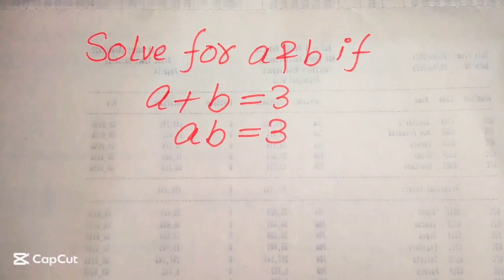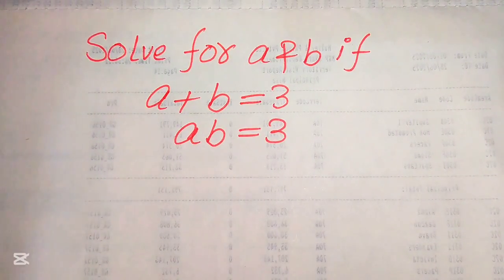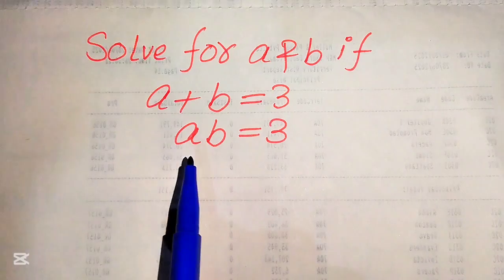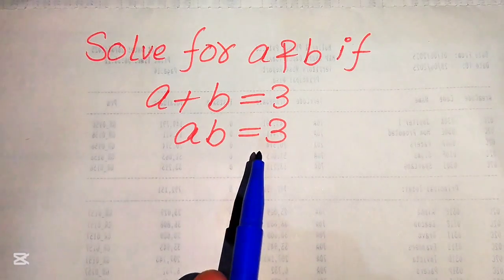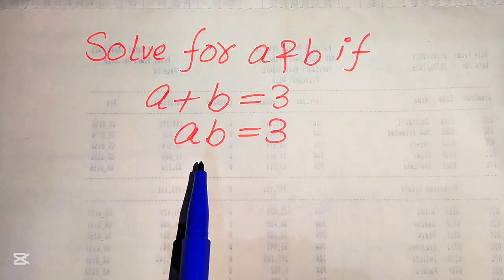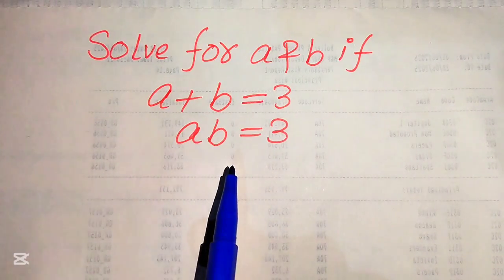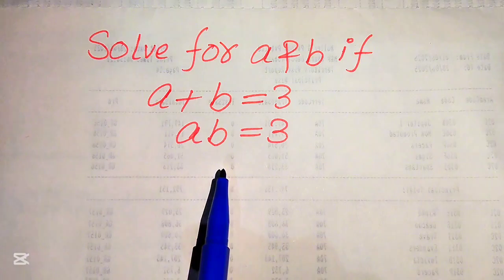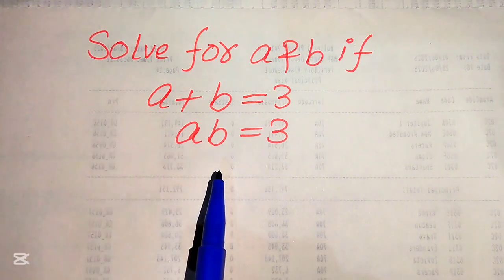Hello everyone, welcome to solve this nice math lumped algebra problem. Here we have A plus B equals to 3 and AB equals to also 3, and we solve this problem for the values of A and B.